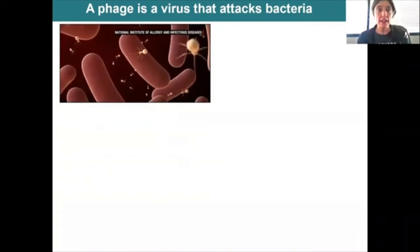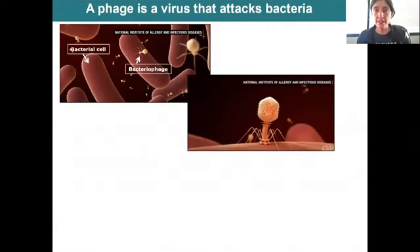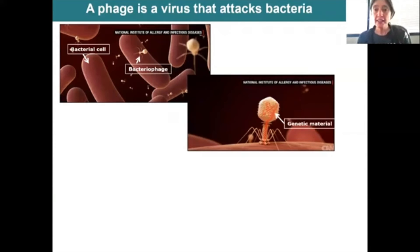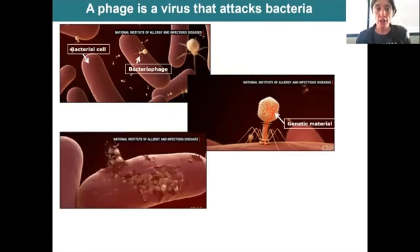Let me show you. Here's an image of a bacterial cell and there is a bacteriophage ready to attack it. Looking at it more closely, you can see that the bacteriophage lands on top of the cell but it does not go in. Instead, it's going to inject that genetic material inside of the cell, and the genetic material has the information to make more bacteriophage.